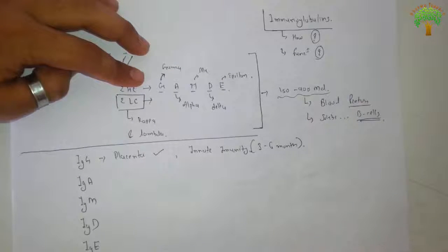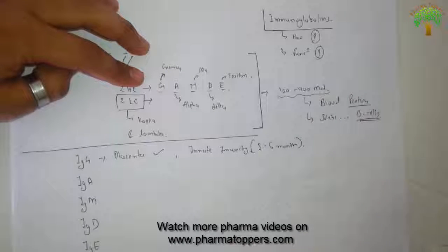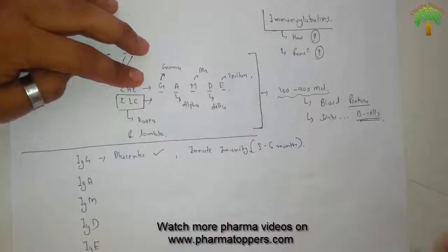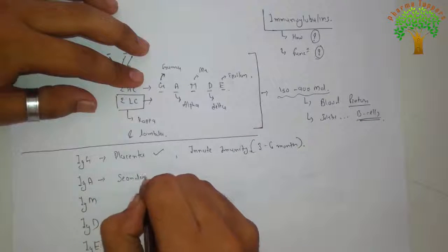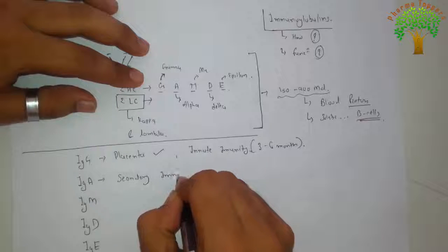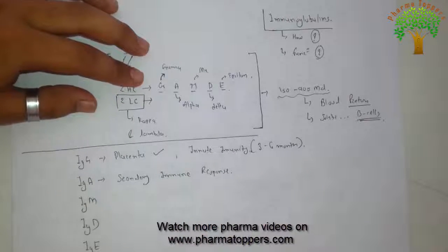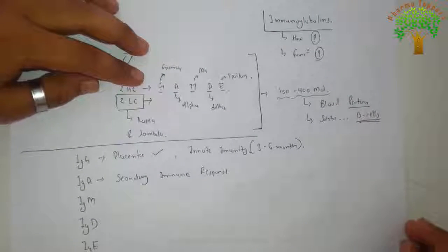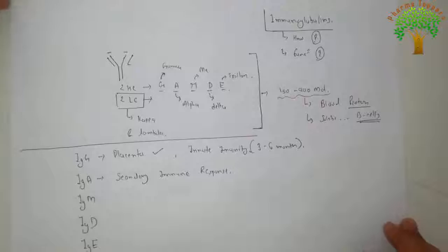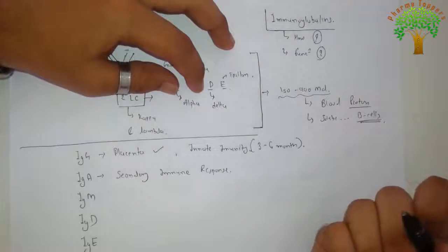Next is IgA. IgA basically is for the secondary immune responses. It is not a direct one - it is exaggerated by one of the factors and then after it spreads. So it is a secondary immune response.